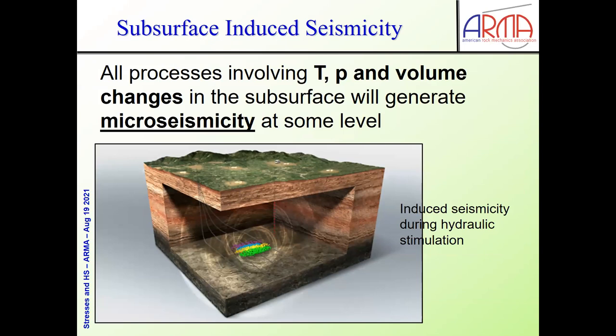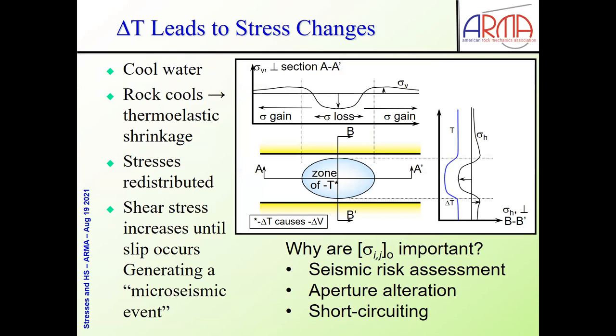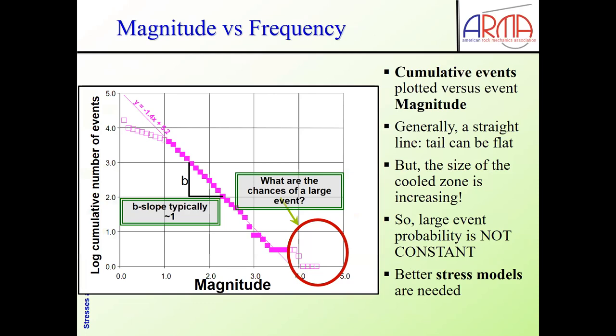All processes involving temperature, pressure, and volume changes in the subsurface will generate micro-seismicity at some level. When you cool things, that faint blue zone — the cooling region — shows a massive stress drop and a stress transfer to the shoulders when you look at the horizontal stresses. The same thing happens with the vertical cross-section. When sigma-H and sigma-V curves are very steep, that means a very large shear stress. So you cannot cool the rock without generating some level of micro-seismicity. The initial stresses are very important for seismic risk assessment, as well as aperture alteration and short-circuiting.